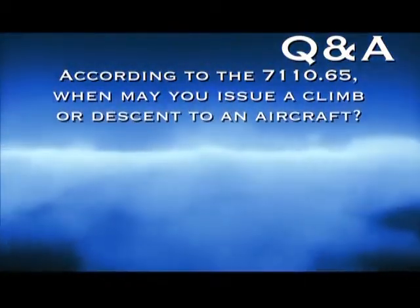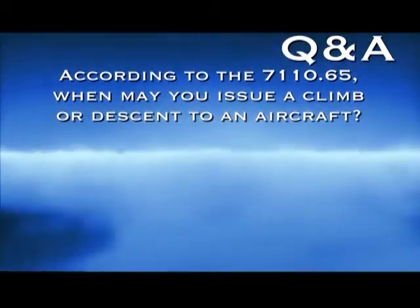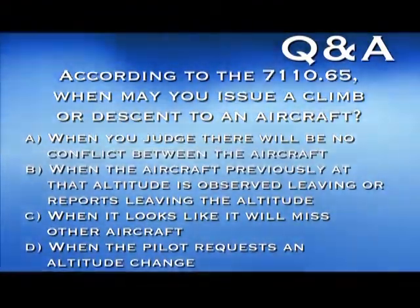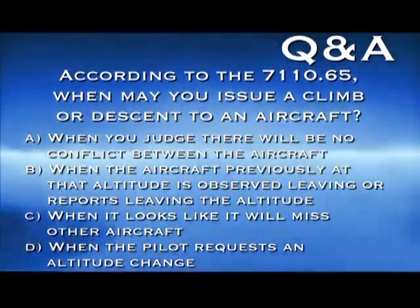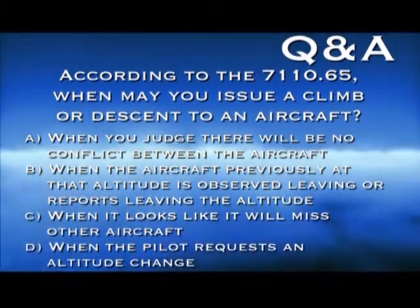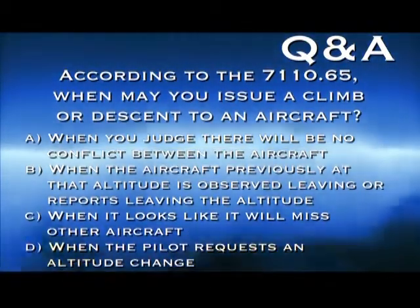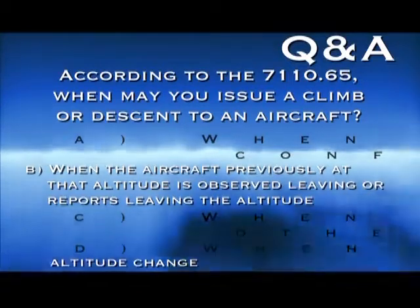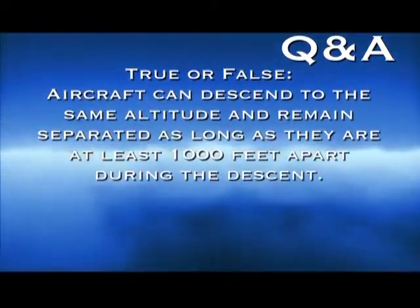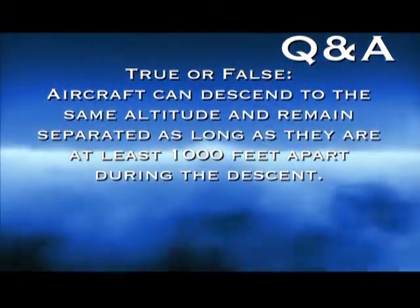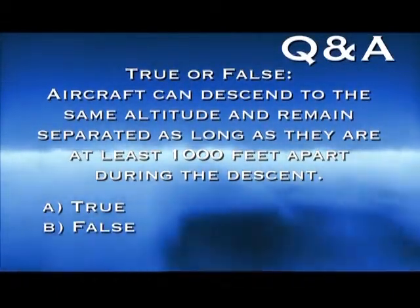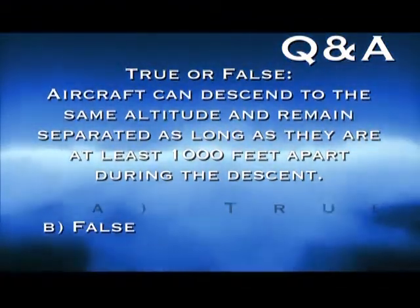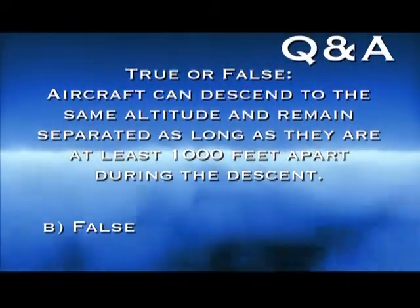According to the 7110.65, when may you issue a climb or descent to an aircraft? A: when you judge there will be no conflict; B: when the aircraft previously at that altitude is observed leaving or reports leaving the altitude; C: when it looks like it will miss other aircraft; D: when the pilot requests an altitude change. The correct answer is B. True or false: aircraft can descend to the same altitude and remain separated as long as they are at least 1,000 feet apart during the descent. The answer is false — vertical separation does not exist during a descent; it only applies to the final altitudes of the two aircraft.